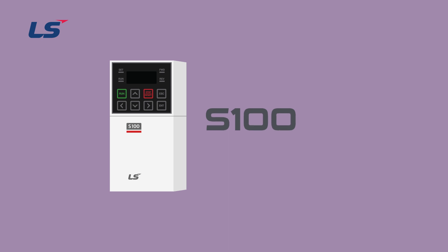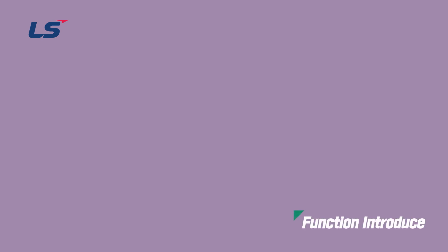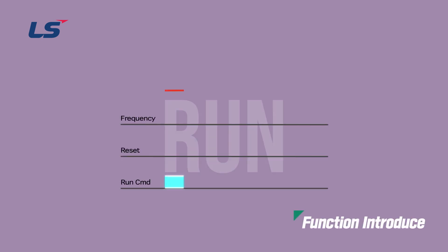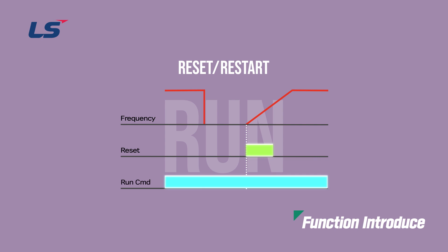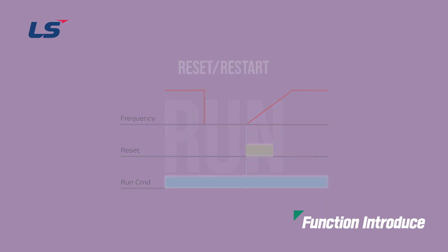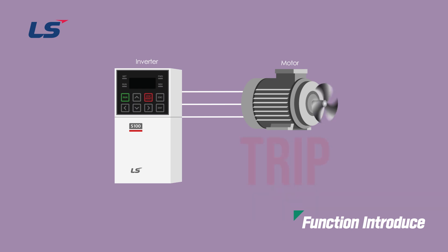In this video we will introduce the Reset Restart function of the S100. The Reset Restart function automatically resets the trip and restarts if the Terminal Block Operation command is on after a trip occurs. This function can be used when you want to automatically clear and restart an intermittent trip.